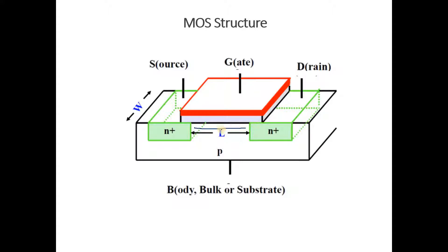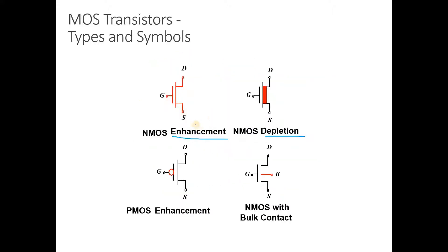Once the channel is created, if you apply a voltage VDS across drain and source, conduction takes place. This is called enhancement-type MOSFET. In depletion type, the channel is already present. When you apply a certain potential on the gate, the channel starts depleting and at a certain potential it is completely vanished, so no further conduction is possible.